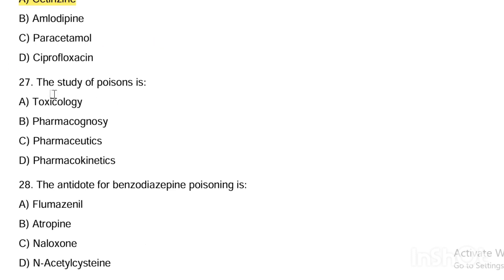Next question. The study of poisons is: Option A, toxicology. Option B, pharmacognosy. Option C, pharmaceutics. Option D, pharmacokinetics. Answer: study of poisons is Option A — toxicology.